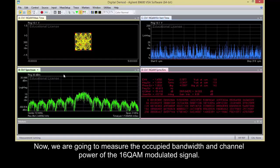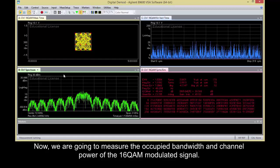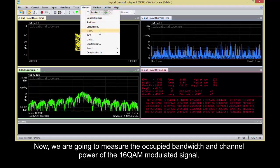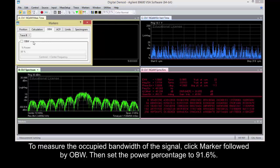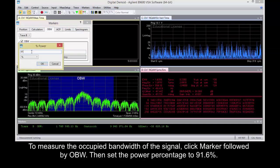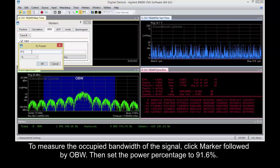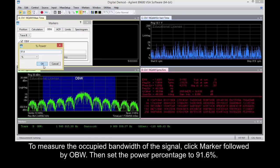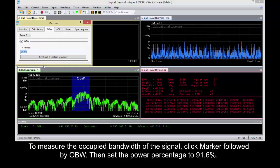Now we are going to measure the occupied bandwidth and channel power of the 16QAM modulated signal. To measure the occupied bandwidth of the signal, click Marker followed by OBW. Then set the power percentage to 91.6%.